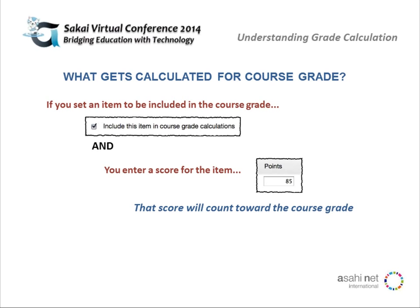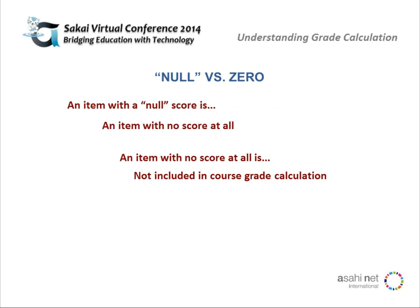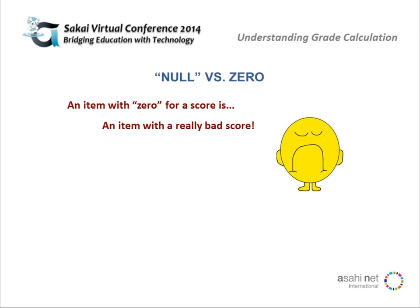In terms of what gets calculated, it's pretty basic. If you include something in a course grade calculation and you enter a score for it, then it's going to count towards the course grade. This is probably the easiest part, but it's worth noting. One thing to consider — as Diego had pointed out — is this idea of a null score, which is no score at all. No score at all means it's not included in the course grade calculation, even if that item has been set to be included in course grade. This is much different from zero, which of course is a really bad score.